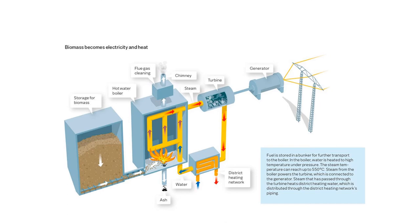Here is a model showing in brief the usage of bioenergy for producing electricity and heating. Fuel is stored in a bunker for transport to the boiler, where water is heated to high temperature under pressure, with steam temperature reaching up to 550°C. Steam from the boiler powers the turbine connected to the generator. Steam that has passed through the turbine then heats district heating water, which is distributed through the district heating network's piping.